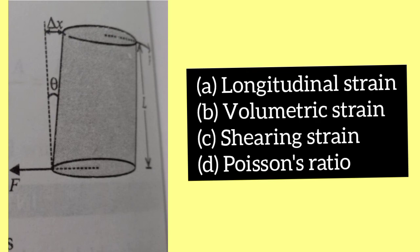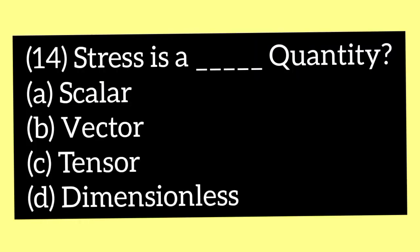Coming to the next question: if two equal opposite deforming forces are applied parallel to the cross-sectional area of a cylinder as shown in the figure, there is a relative displacement between the opposite faces of the cylinder. The ratio of delta x to L is called — option A longitudinal strain, option B volumetric strain, option C shearing strain, and option D Poisson's strain. The answer is option C, shearing strain.